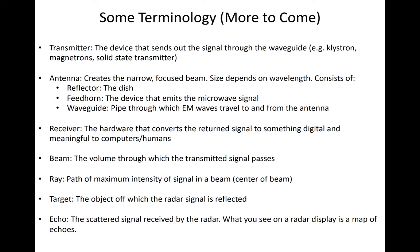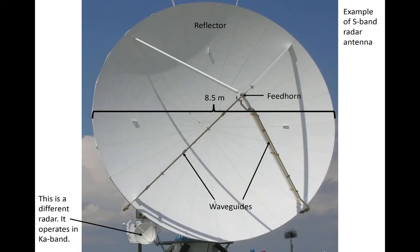Collectively, the hardware involved in producing waves at the desired frequency is called a transmitter, which includes klystrons, magnetrons, or solid-state transmitters. An example of a radar antenna is shown here. This picture was taken in the field of the National Center for Atmospheric Research S-Polka radar system. This consists of an S-band radar and a much smaller Ka-band radar antenna. Focusing on the S-band, the entire dish, or reflector, pictured, is approximately 8.5 meters in diameter.